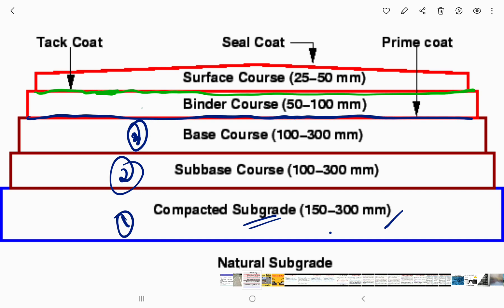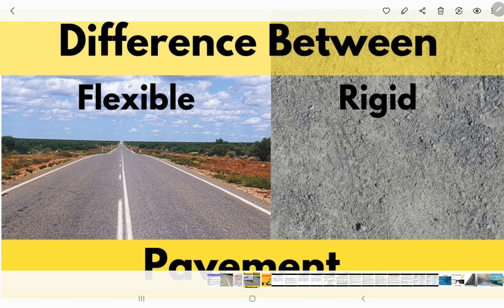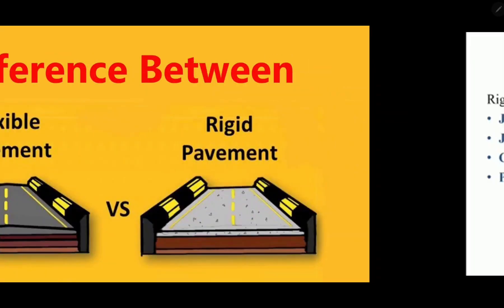Last one is surface course. The surface course is the topmost layer of the pavement. This is the smooth surface we provide. This is for drainage and for percolation. This is the flexible pavement parts. This figure shows the flexible pavement versus rigid pavement difference. In rigid pavement, you can have the base course. In flexible pavement, you can do the layers using asphalt.